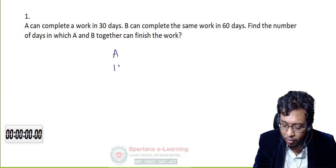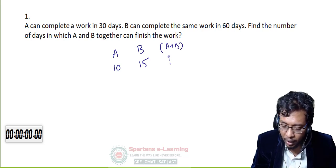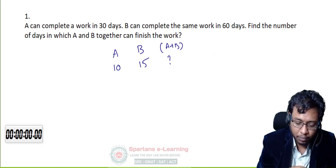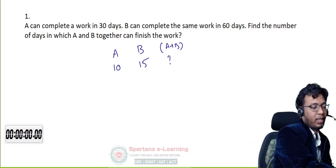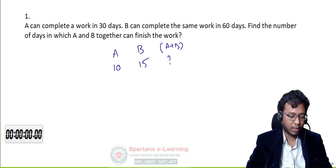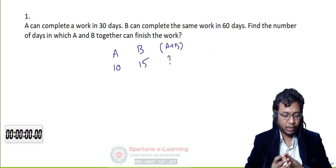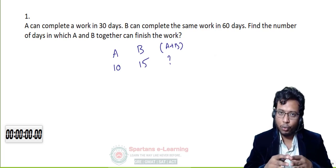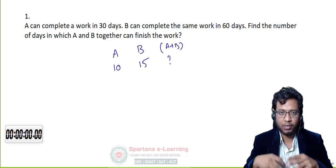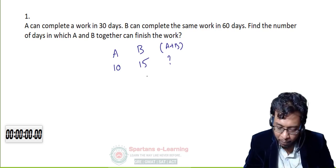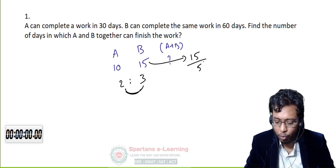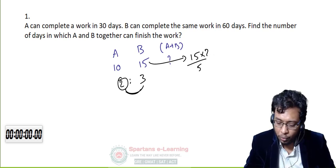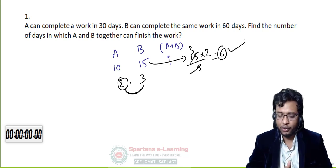Now: A can do a piece of work in 10 days, B can do it in 15 days. A plus B can do in how many days? What is the ratio between 10 and 15? It is 2:3. Pick the bigger number — 15. Multiply by the smaller ratio (2) and divide by the sum (2+3=5). So 15 × 2/5 — the 5 cancels giving 3 × 2 = 6. The answer is 6 days. This is the shortest way to solve orally.